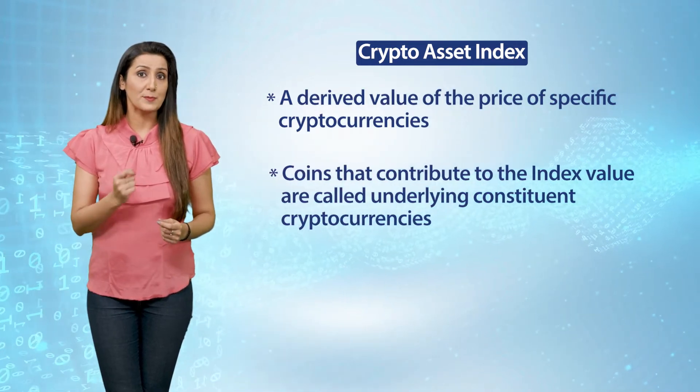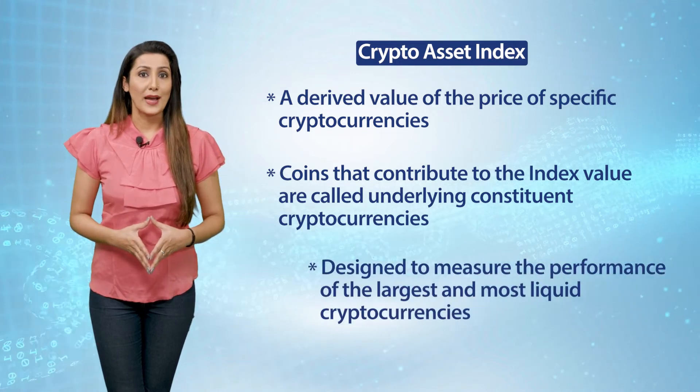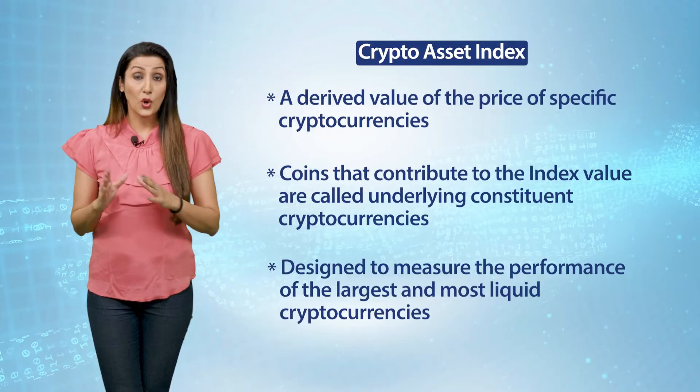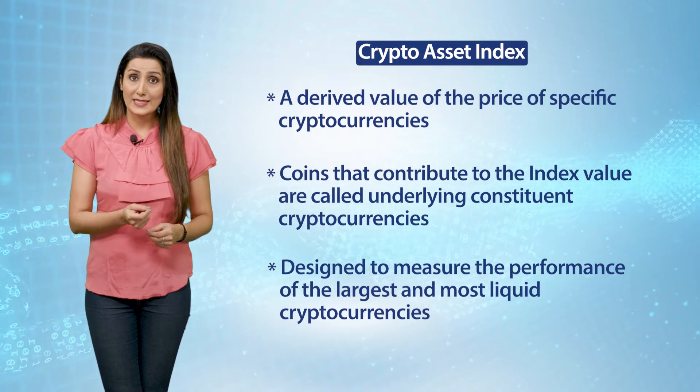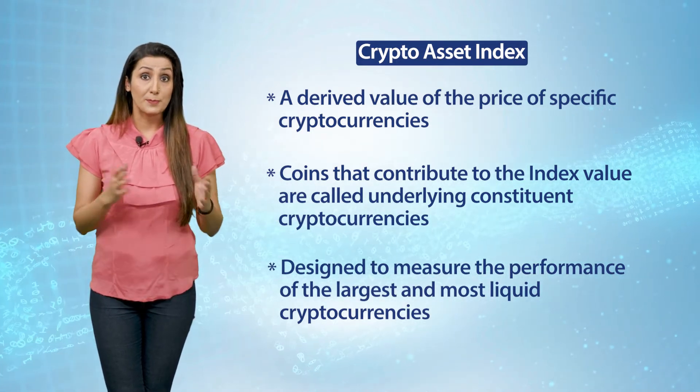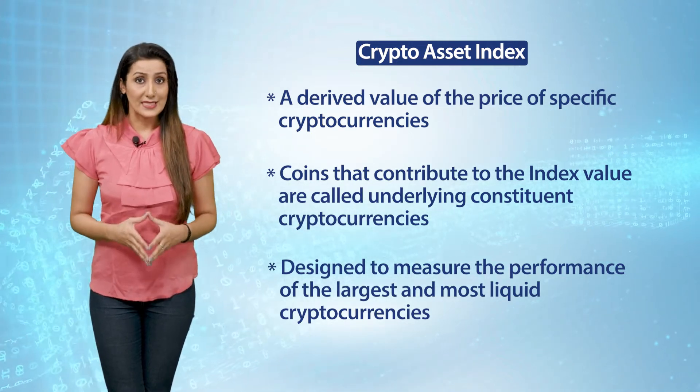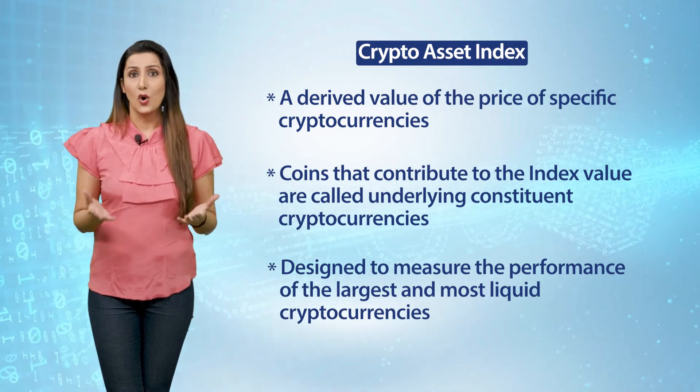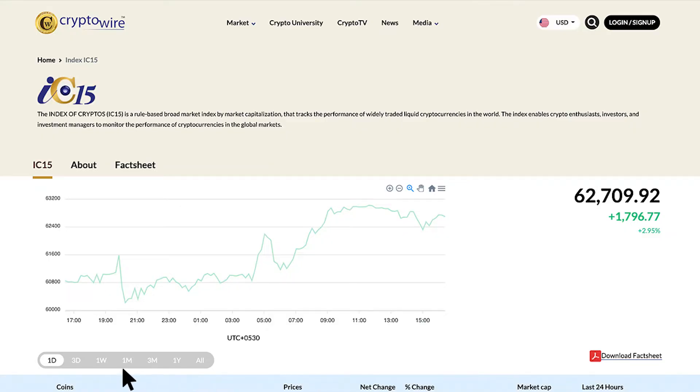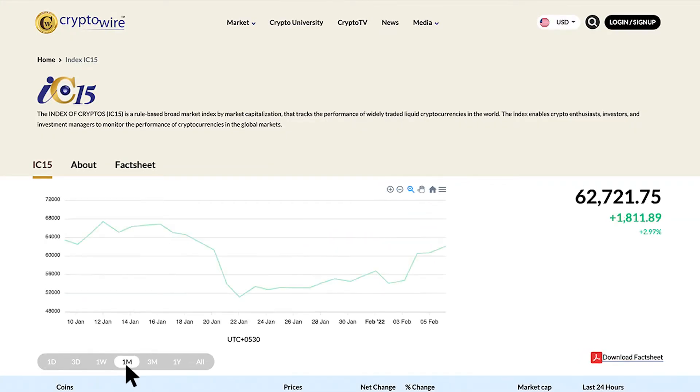In this session we shall discuss how a cryptocurrency index becomes a barometer of the global crypto assets market, and more specifically the utility of the global super index called the IC15. A cryptocurrency index is a derived value of the price of specific cryptocurrencies that are listed and traded on global crypto asset exchanges. The coins that contribute to the index value are referred to as the underlying constituent cryptocurrencies, which necessarily need to be liquid and widely traded on global exchanges.